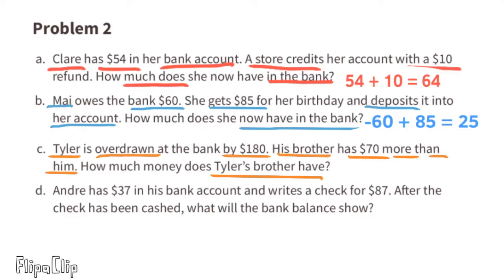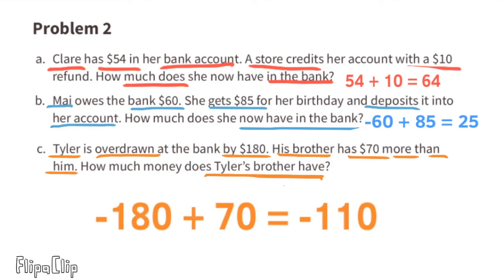Part c: Tyler is overdrawn at the bank by $180. His brother has $70 more than him. Overdrawn means you've spent more than you had, so Tyler's account is at negative $180. His brother has $70 more: negative 180 plus 70 equals negative $110. Tyler's brother is overdrawn $110, equivalent to negative $110 in his account.